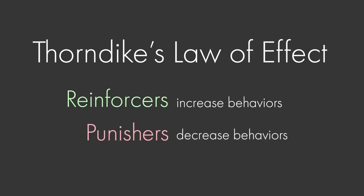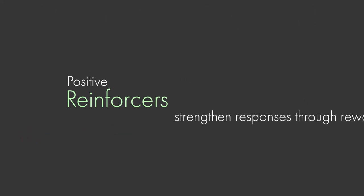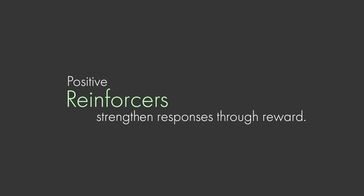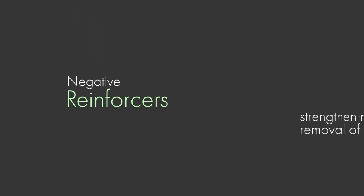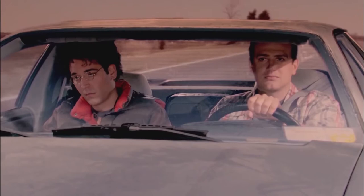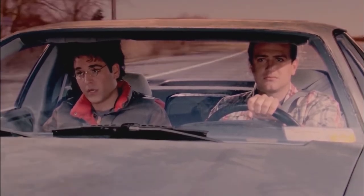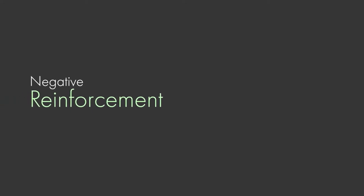A reinforcer can be either positive or negative. Positive reinforcement strengthens responses by giving rewards after a desired event — like the rat snack after the lever press, or getting a cookie when you say please. Negative reinforcement is a little trickier: it increases a behavior by taking away an aversive stimulus. For example, your car does that beeping thing until you fasten your seatbelt — the car reinforces your seatbelt wearing by removing that horrible beeping. That's an example of negative reinforcement.